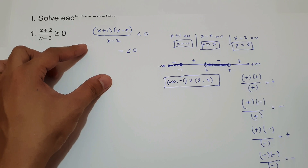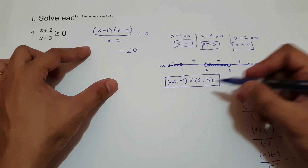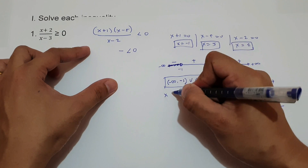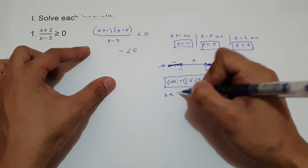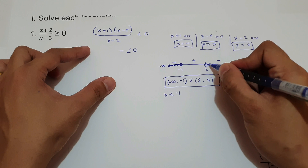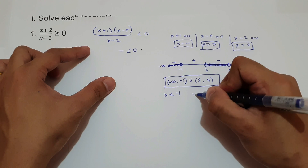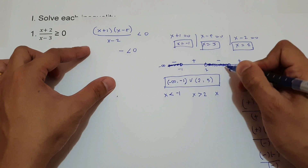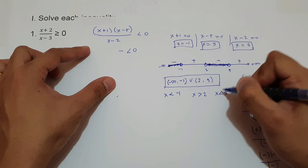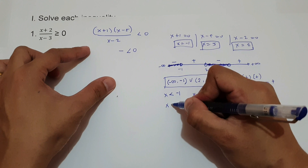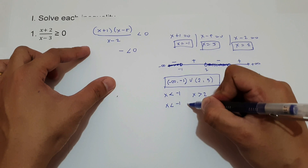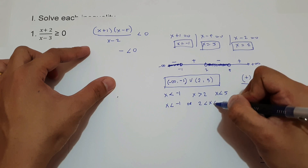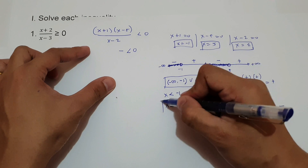For inequality notation: x less than negative 1 — the direction is to the left — or x greater than 2 and less than 5 — the direction of 2 is to the right and the direction of 5 is to the left. So our answer is x less than negative 1 or 2 less than x less than 5.